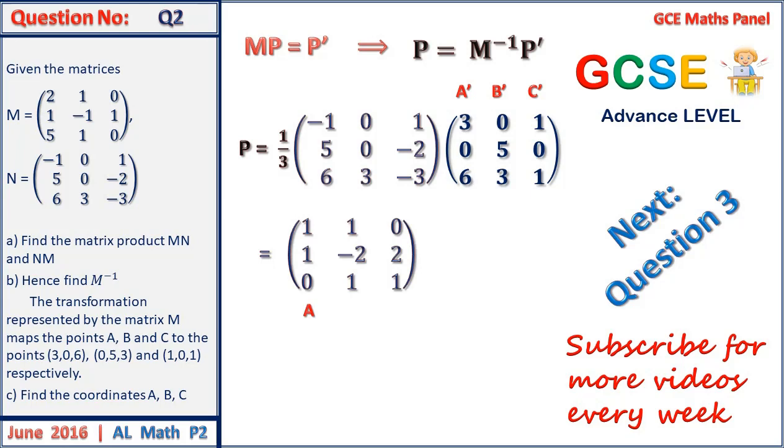When we do this multiplication and simplify, we obtain (1,1,0), (1,-2,1), (0,2,1), which are the points A, B, and C respectively. Therefore A is (1,1,0), B is (1,-2,1), and C is (0,2,1).